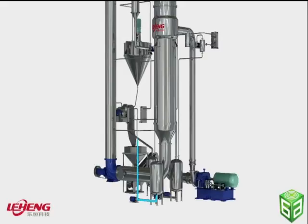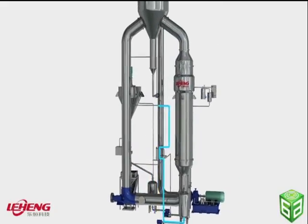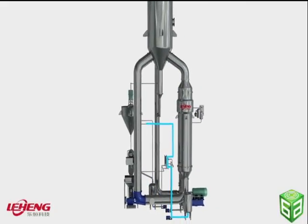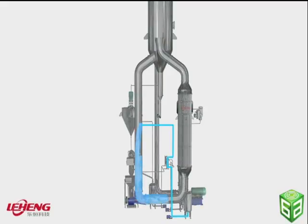After being preheated by a primary heat exchanger, feed liquid temperature will increase. Through a feed pump, feed liquid will be transported to the forced circulation evaporation system.